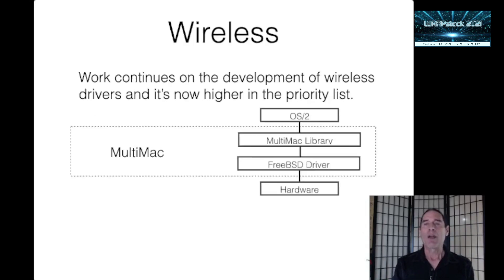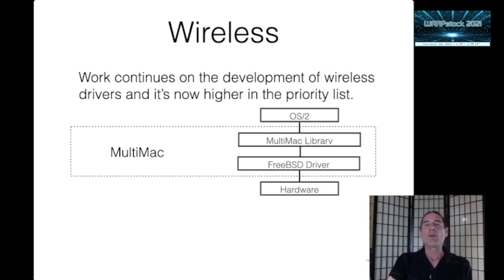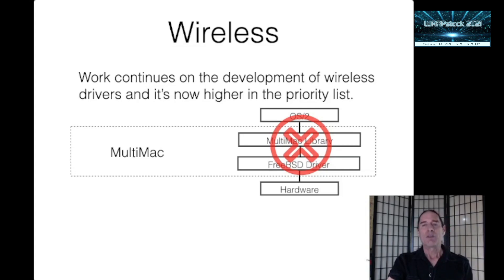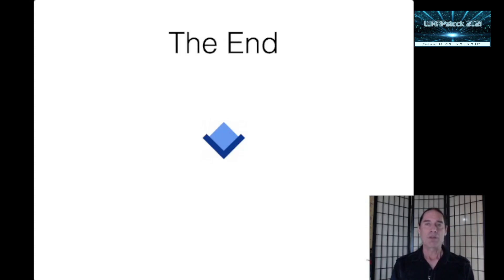Work continues on the development of wireless drivers, and they have actually moved up in the priority list recently. I've tried several approaches to porting existing Unix drivers to OS/2 — similar to what's done with the current multi-MAC wired drivers — but every attempt has failed. The architecture is just too radically different; the Unix drivers just don't map into what OS/2 wants to see. So the old multi-MAC approach isn't going to work, and I'm now working on a different approach similar to how some other non-network drivers for OS/2 were created — and so far this seems to be going quite a bit better.